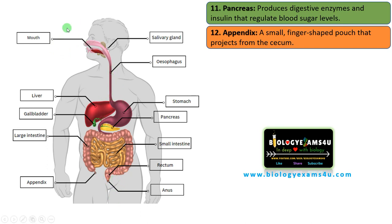It has different parts: mouth, esophagus, stomach, small intestine, large intestine, rectum, and anus. There are also accessory organs that help in digestion, like the liver, gallbladder, pancreas, etc.